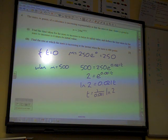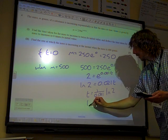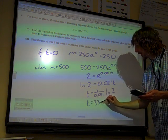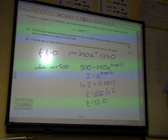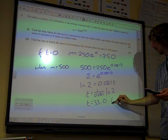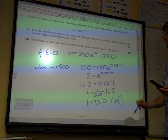And my calculator has just said t equals 33.0, it's 0, 0, 7, 0, 0, 8, 6. So it's 33.0 to 3 significant figures.